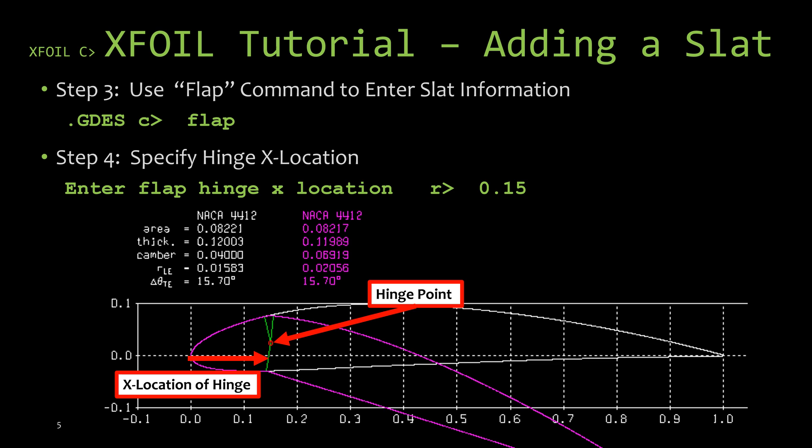But for a normalized chord, we can just type in the percentage of the chord where we want our slat to hinge at. And we're going to want it to hinge for this example at 15 percent of the chord. So go ahead and type 0.15 and hit enter.